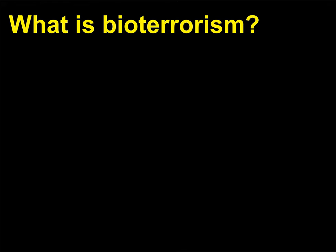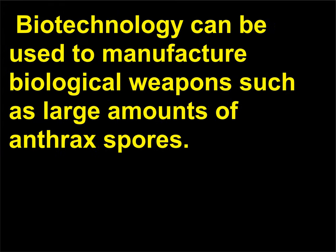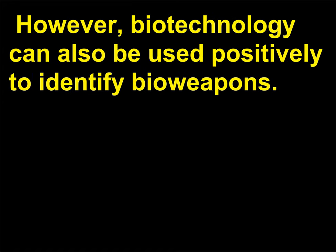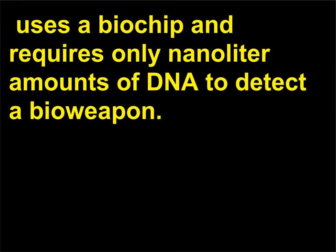What is bioterrorism? Bioterrorism is the use of biological substances or toxins with the goal of causing harm to humans. Biotechnology can be used to manufacture biological weapons such as large amounts of anthrax spores; however, biotechnology can also be used positively to identify bioweapons. A new faster method of PCR, called continuous flow PCR, uses a biochip and requires only nanoliter amounts of DNA to detect a bioweapon.